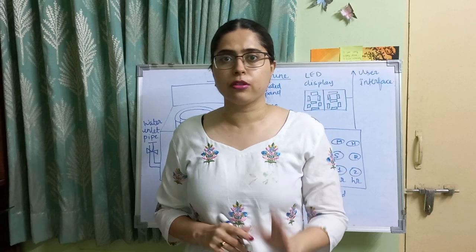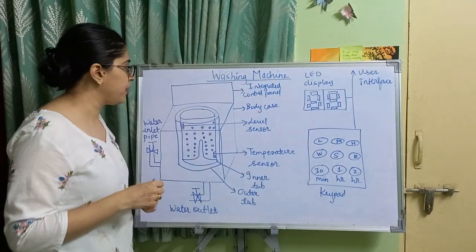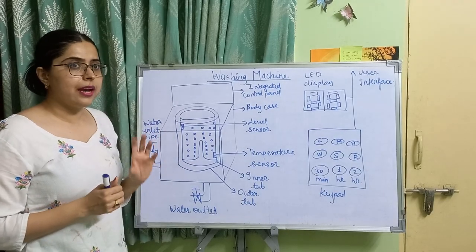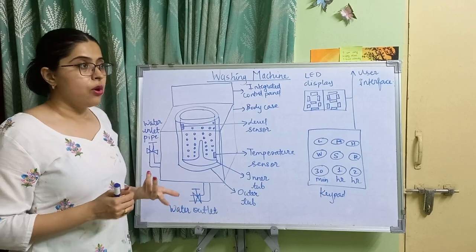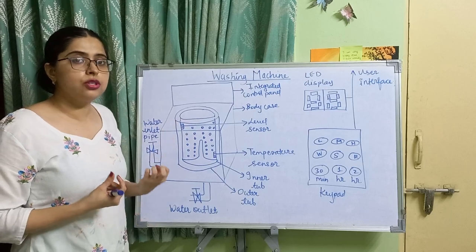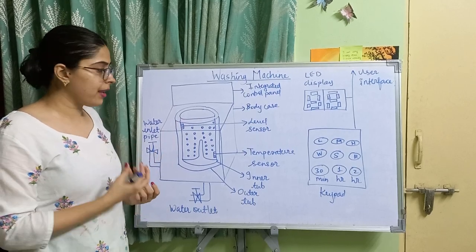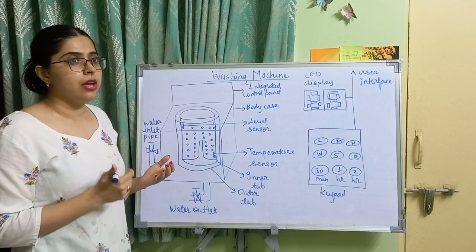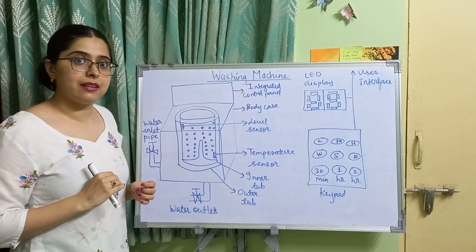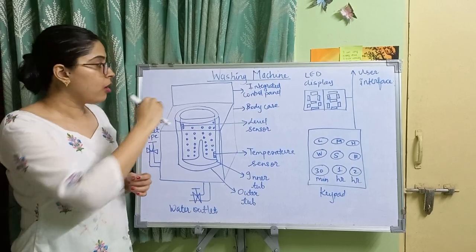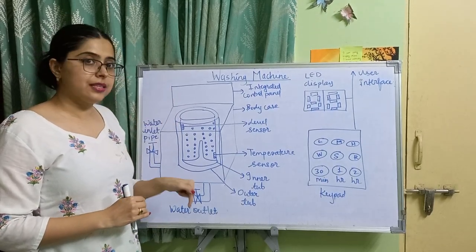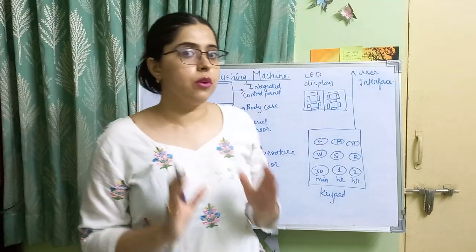Now the working of this washing machine operates in two important phases. In the first phase, the motorized agitator moves in the clockwise and anti-clockwise direction — back and forth. Because of this movement, all the clothes inside the tub move to the bottom, then back up to the top, and the process repeats. Water also enters through the water inlet pipe into the tub.